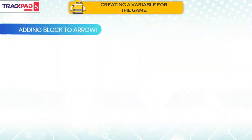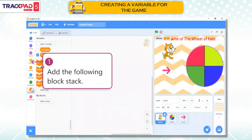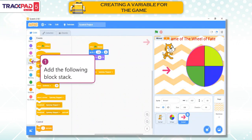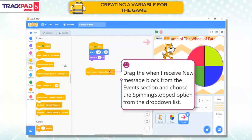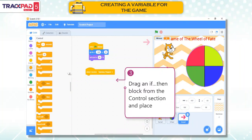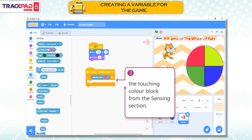Adding block to Arrow 1. Step 1: Add the following block stack. Step 2: Drag the When I Receive New Message block from the Events section and choose the Spinning Stopped option from the drop-down list. Step 3: Drag an If-Then block from the Control section and place the Touching Color block from the Sensing section.